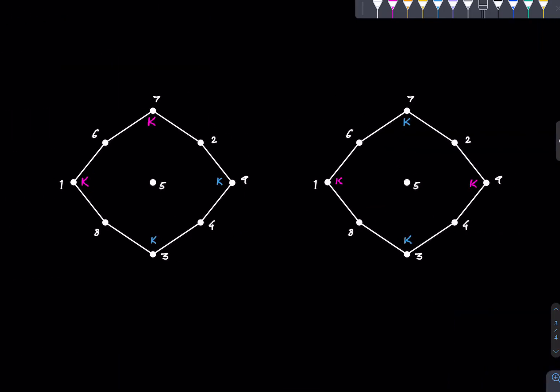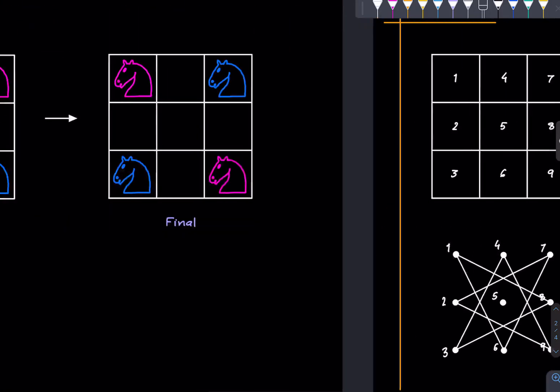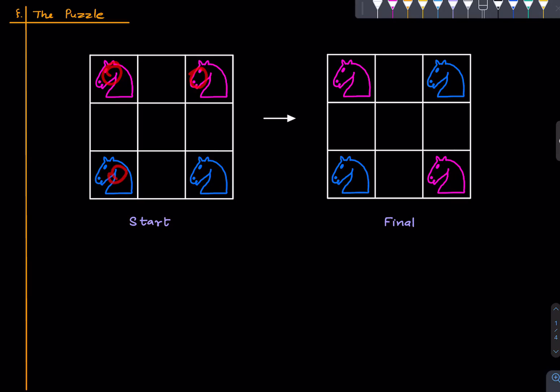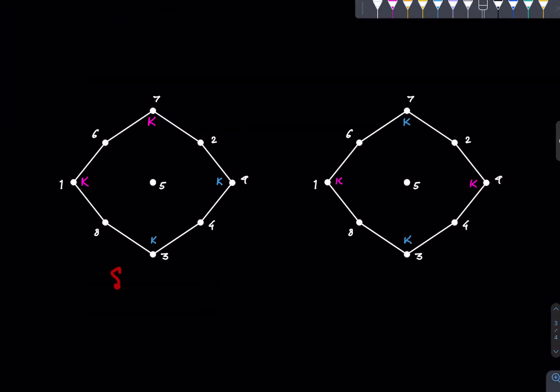Now let us recast the problem. We are given that we have two red knights sitting on 1 and 7, and two blue knights sitting on 3 and 9. This is the starting position.